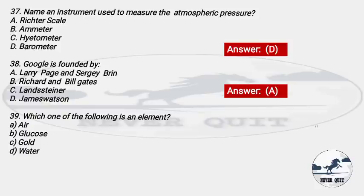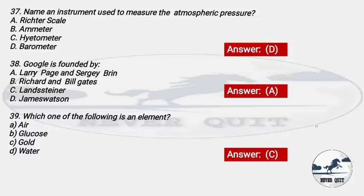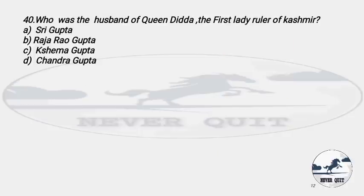Question 39: Which one of the following is an element? Options: A) Air, B) Glucose, C) Gold, D) Water. The right answer is option C — Gold. Gold is a pure element. Glucose and water are compounds, while air is a mixture.